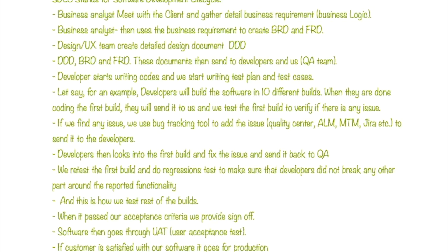They send it back to QA, and we retest the first build and do regression testing to make sure developers did not break any other part around the reported functionality. This is how we test the rest of the builds. When it passes our acceptance criteria, we provide sign-off. The software then goes through UAT, and if the customer is satisfied it goes to production, and we provide maintenance after that.